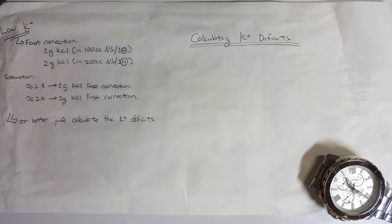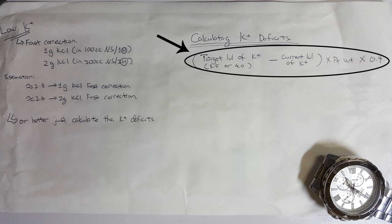We first take the target level of potassium that we want to achieve, 3.5 in most cases, but some MOs want us to correct to 4.0, then minus the current level of potassium. Take that value, times the body weight of the patient, and then times 0.4. This will give us the mmol of potassium that the patient needs.